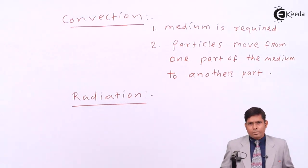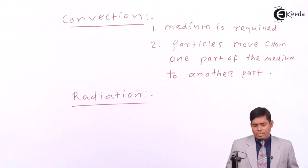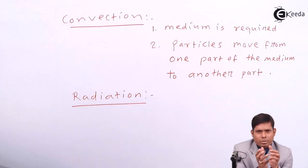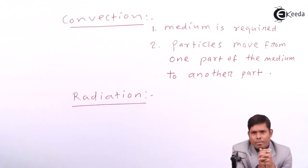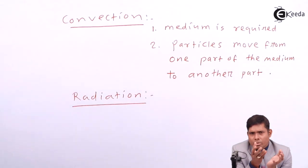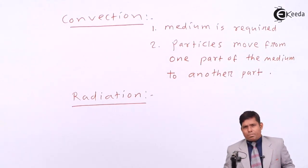We will discuss radiation in more detail at the higher standard level. For now, we will focus our attention on conduction and convection. As an example, suppose there is a cup of tea kept on a table. We know that after some time, it will cool down — its temperature will decrease — and heat from the tea is transferred to the surrounding room. The room temperature is obviously less than the temperature of the hot tea, so heat flows from the tea to the air molecules surrounding it. What type of heat transfer is this?